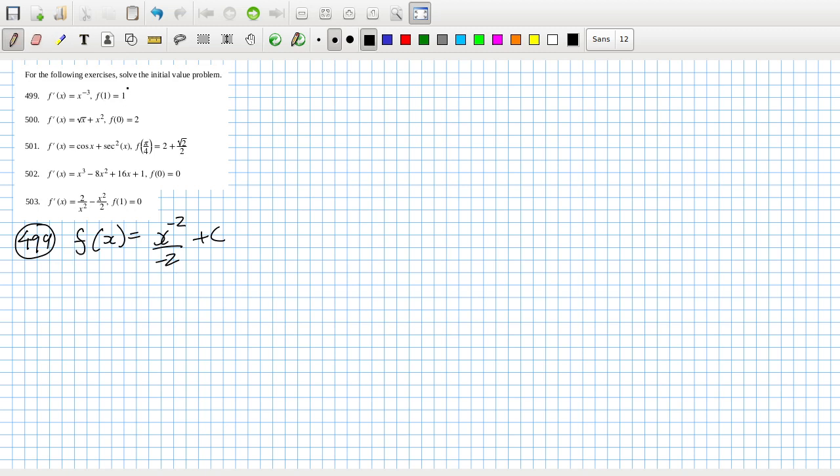We need f(1) to be 1, so f(1) equals 1 minus 2 over minus 2 plus c, and that should equal 1. So that means c equals 3 over 2. The answer is f(x) equals minus 1 over 2x squared plus 3 over 2.